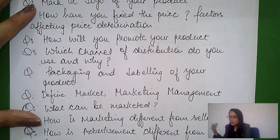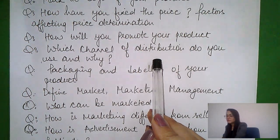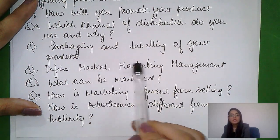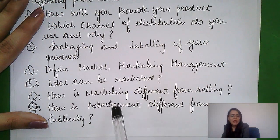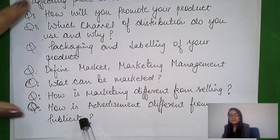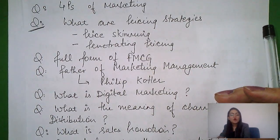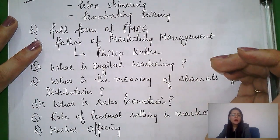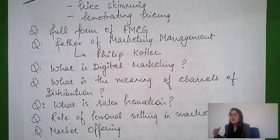Further questions could include: how will you promote your product, what promotional tools did you use, what is the channel of distribution — one level, two level, three level — what is the use of packaging and labeling, what is marketing management, what can be marketed, what is the basic difference between marketing and selling, between advertisement and publicity? Also: what is the brand name, the four Ps of marketing, pricing strategies, price skimming and penetration pricing, full form of FMCG? Who is the father of marketing management — Philip Kotler? What is digital marketing — promoting products using social media like Facebook, Twitter, Instagram, etc.?